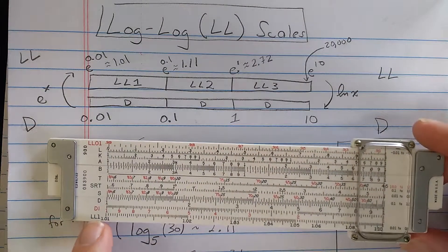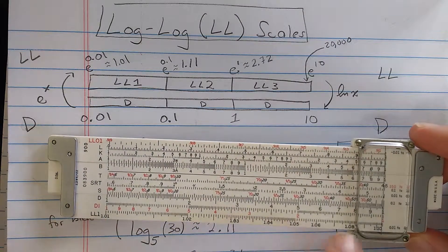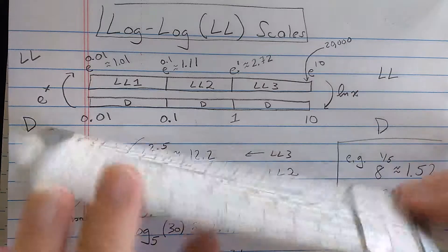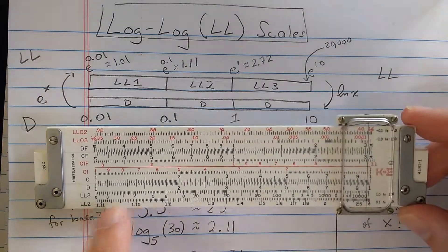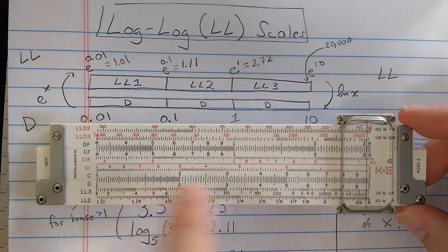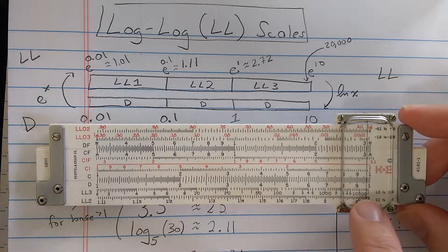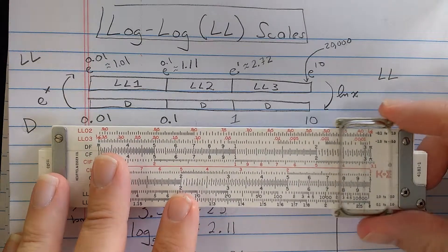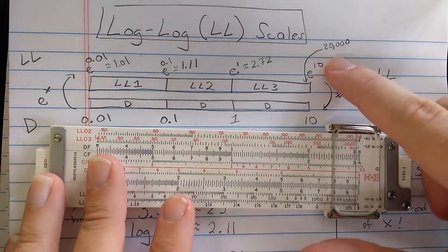Sometimes you'll see an LL0 continuation in that direction on slide rules with lots of log scales. The idea is these are one long scale. See here, 0.01 up through 1.1, and then about 1.1 up through E, and then E through E to the 10 on this end. Right before E to the 10, this tick mark represents 20,000.